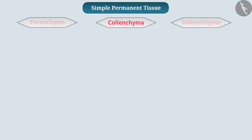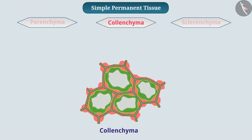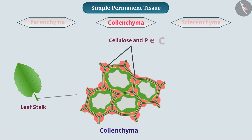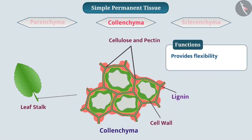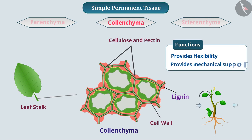Collenchyma is another plant tissue present in the leaf stalk. Cells of collenchyma tissue are live and long, and they contain cellulose and pectin, due to which the walls of cells at the corners are irregularly thick and there is very little space between them. Collenchyma provides flexibility to plants, due to which some parts of the plants — such as stem and leaves — bend easily without breaking. And it also provides mechanical support to the plants.